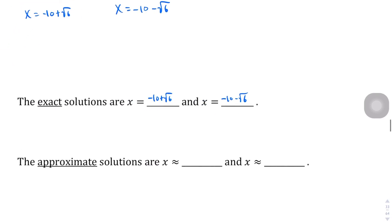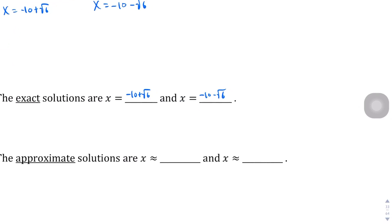Oh, man, they do want the approximate solution. So if you were to punch it in the calculator, let's see, for the plus square root of 6, you would get negative 7.55 according to the answer key and negative 12.44.